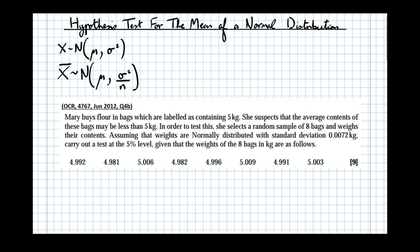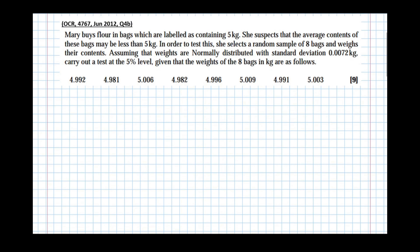So now let's apply this to an exam question. Mary buys flour in bags which are labeled as containing 5kg. She suspects that the average content of these bags may be less than 5kg. In order to test this, she selects a random sample of 8 bags and weighs their contents. Assuming that the weights are normally distributed with standard deviation 0.0072kg, carry out a test at the 5% level.